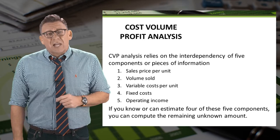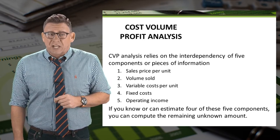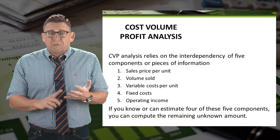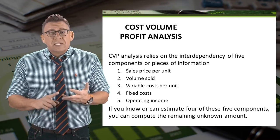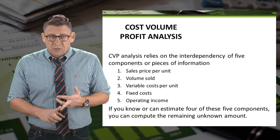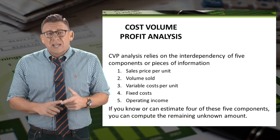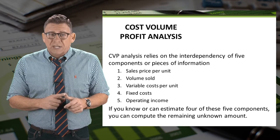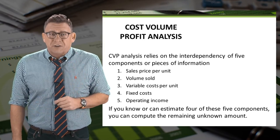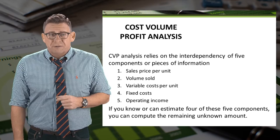CVP analysis is basically elementary algebra. We have five variables: volume, sales price, variable costs, fixed costs, and operating income. As long as we know four of these variables, we can solve for the fifth.